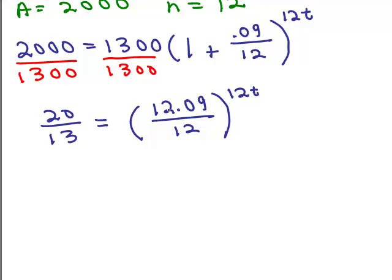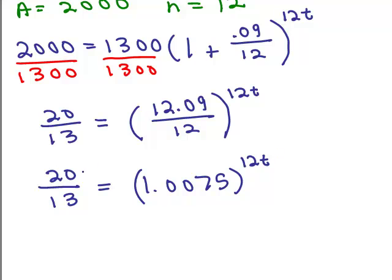At this point, if you divide 12.09 divided by 12, you get 1.0075, an exact number to the 12T. But notice, 20/13, if I try to divide that out, it doesn't come out exact. So if something doesn't come out exact, leave it in fractional form.